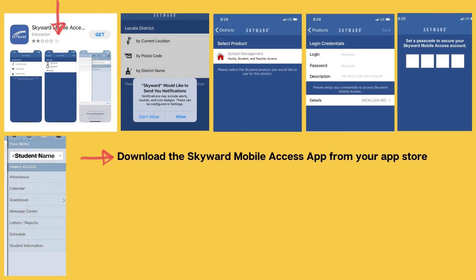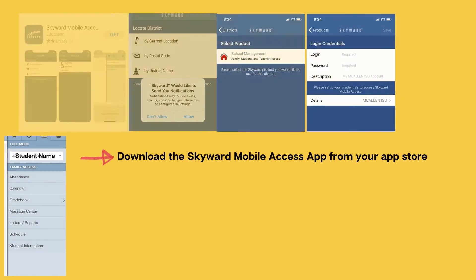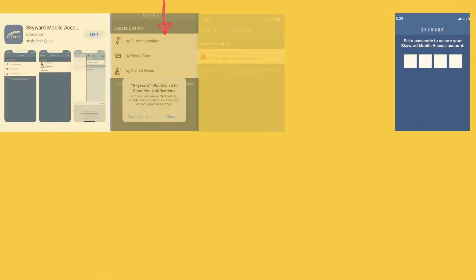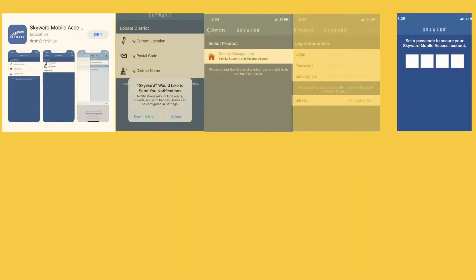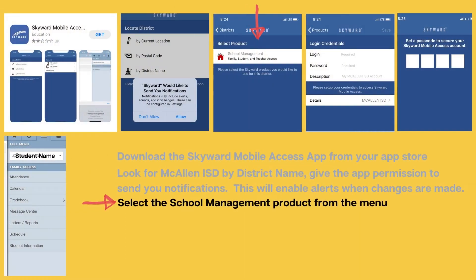First, find the Skyward app on your App Store. Look for Macallan ISD by using the Search by District Name feature. Then give the app permission to send you notifications. This will enable alerts when changes are made. Select the School Management product from the menu.